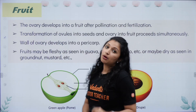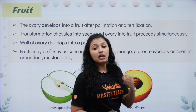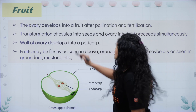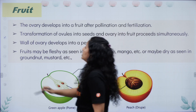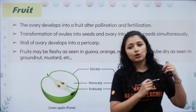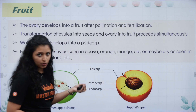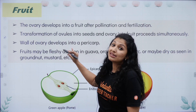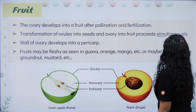Now we will quickly learn about fruit. Just as the ovule develops to form a seed, the ovary develops and forms a fruit. The ovary develops to form a fruit after pollination and fertilization. The transformation of ovules into seeds and the ovary into fruit proceeds simultaneously — seed formation inside and fruit formation outside happen at the same time.